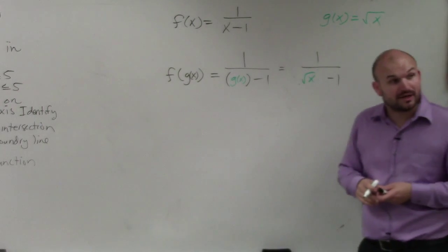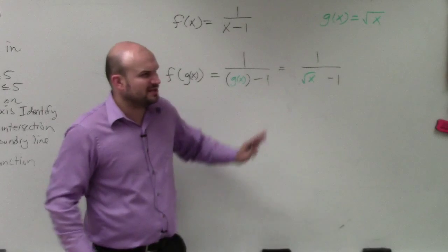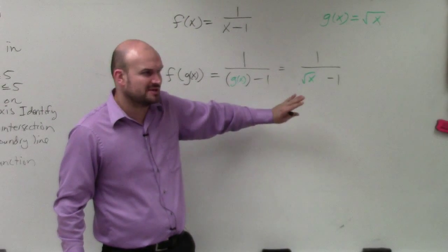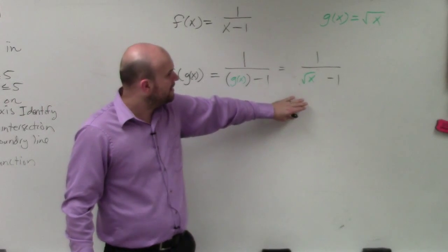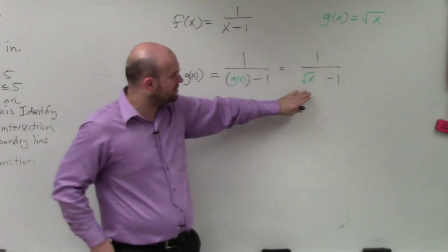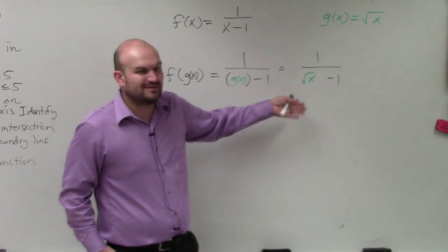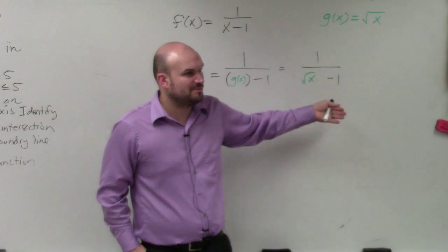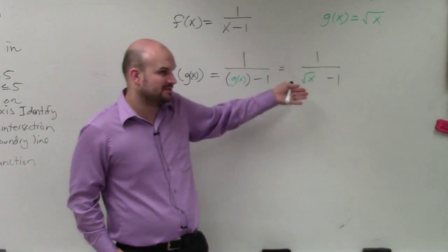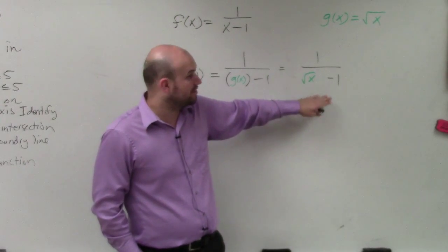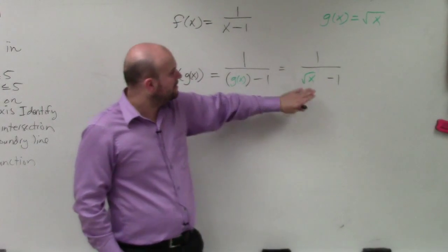We could rationalize the denominator, absolutely. But we'll get into rationalizing the denominator later. So for right now, that's not going to be my focus, because we're going to do a focus lesson on rationalizing the denominator. But anyways, we know that whenever you have a rational equation or function, you always set your denominator equal to 0.